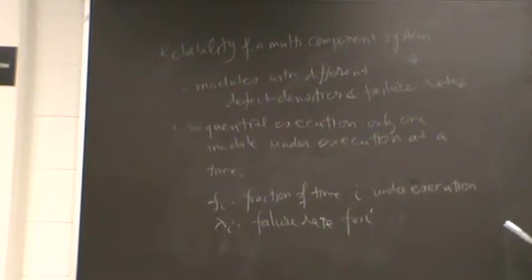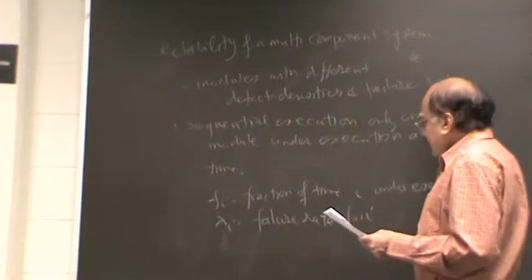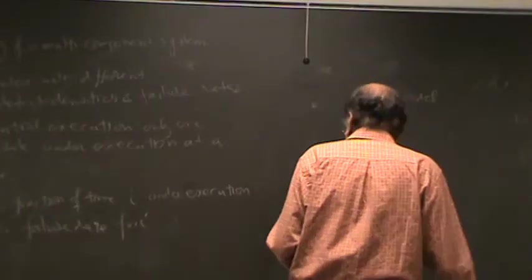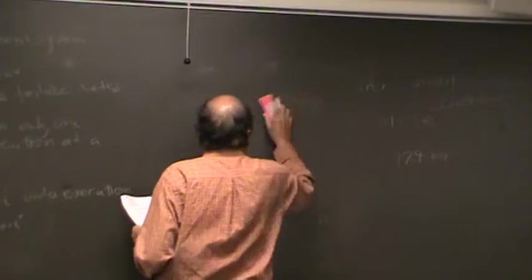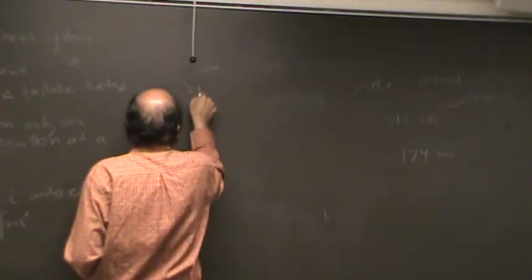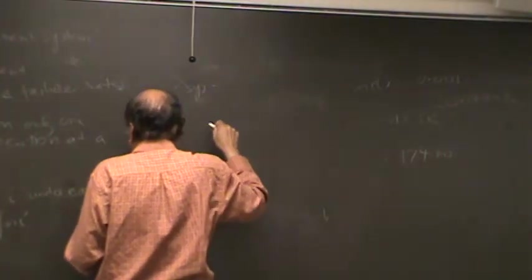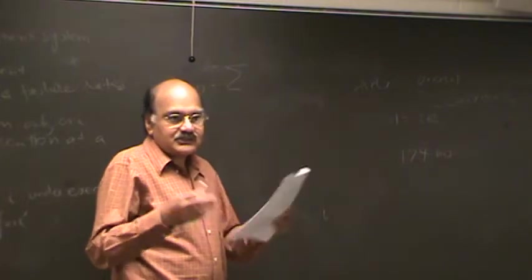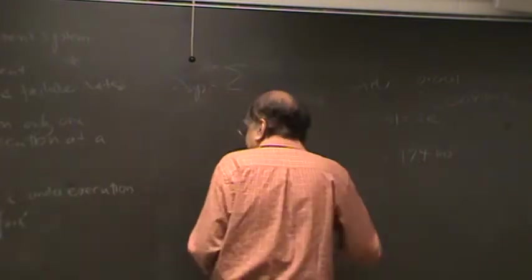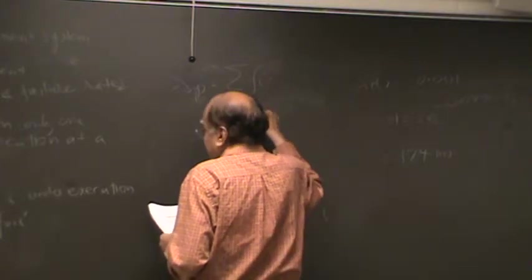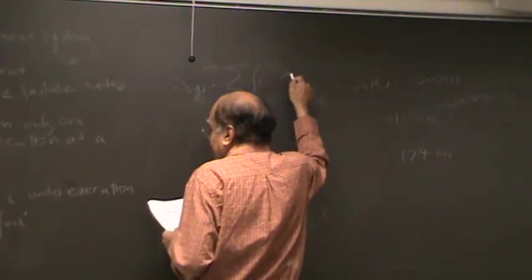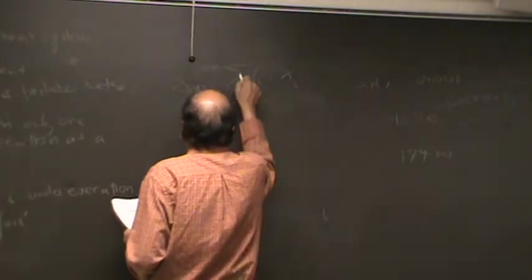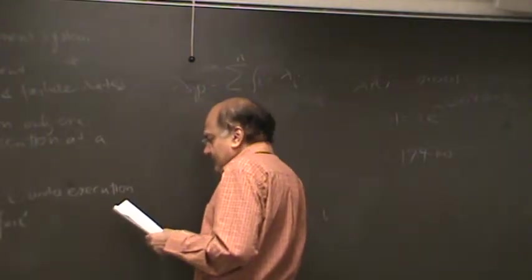Yeah, that's right. You mean, weighted sum? Yeah, exactly. Weighted sum. So basically, the overall failure rate would be equal to weighted sum, or in other words, you could say it's sort of weighted average. Frequency of the time it is under execution, multiplied by fraction of the time it is under execution, multiplied by lambda sub i, and i equal to 1 to n.